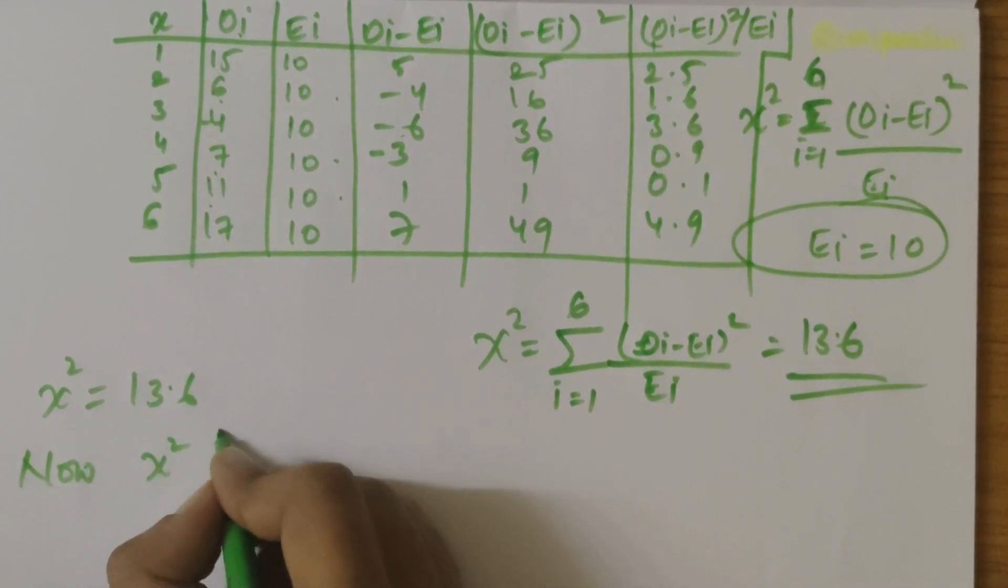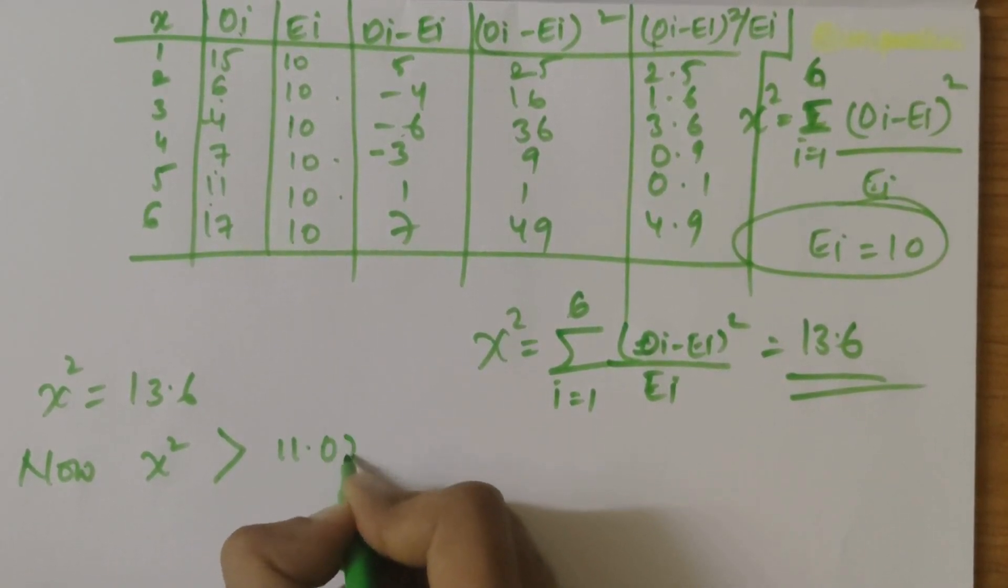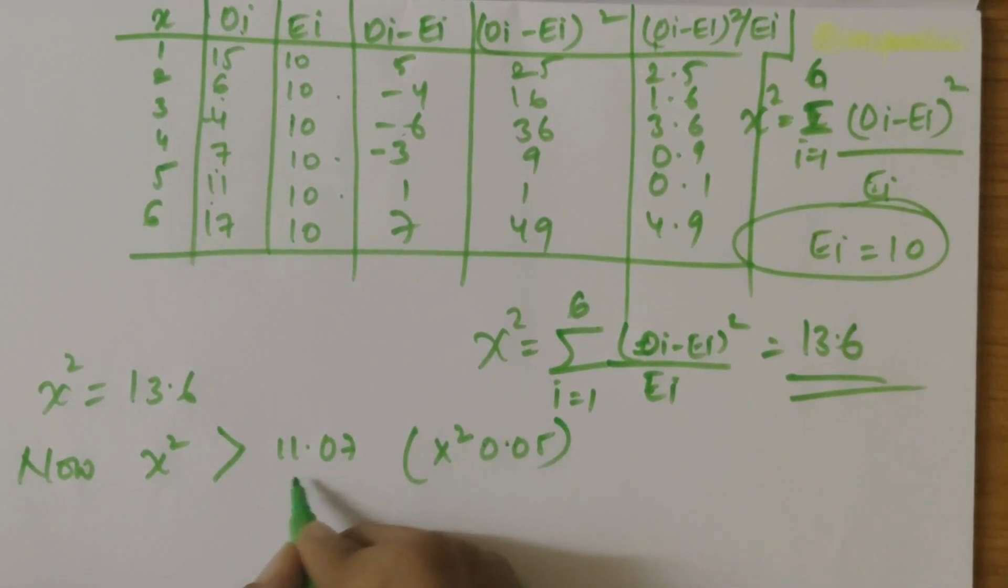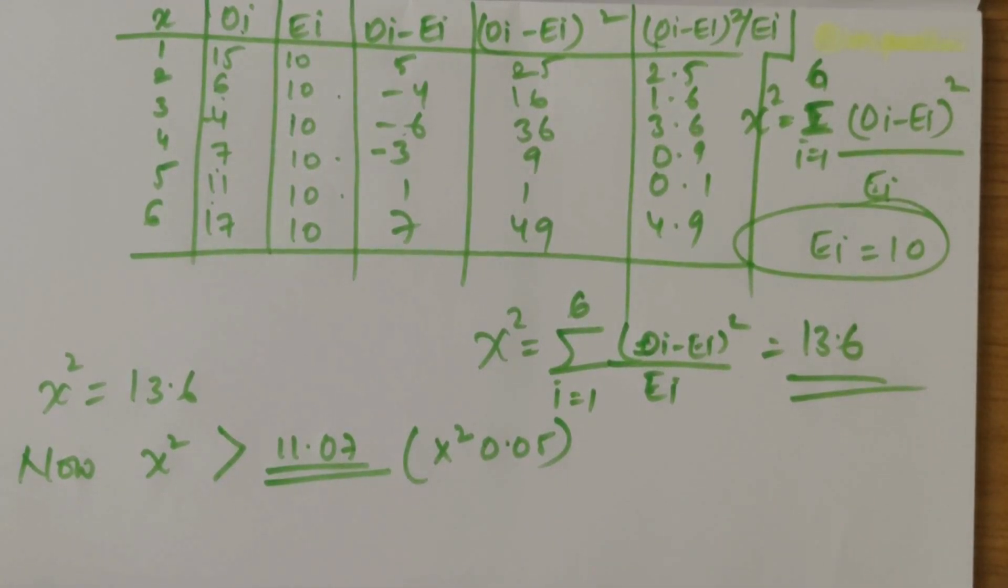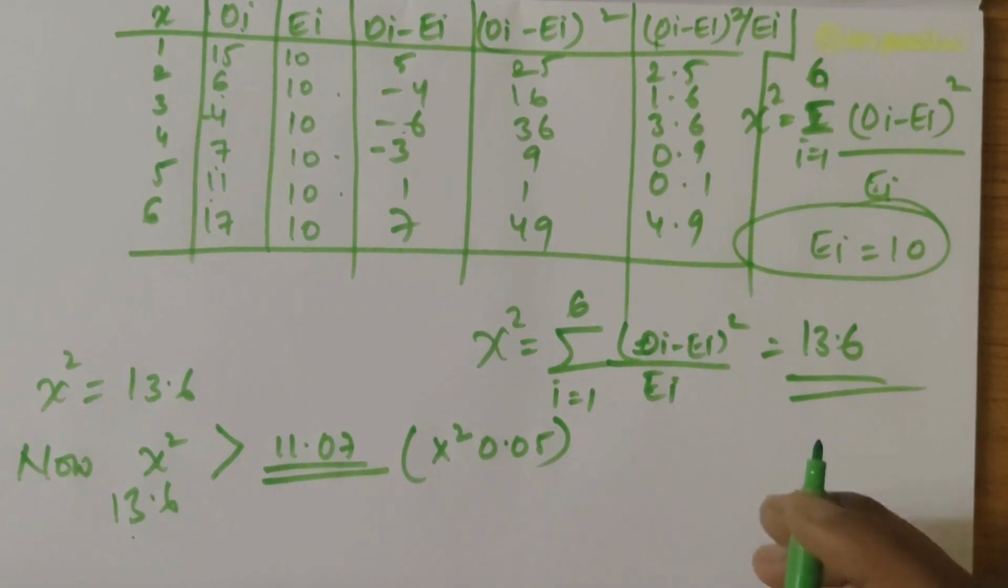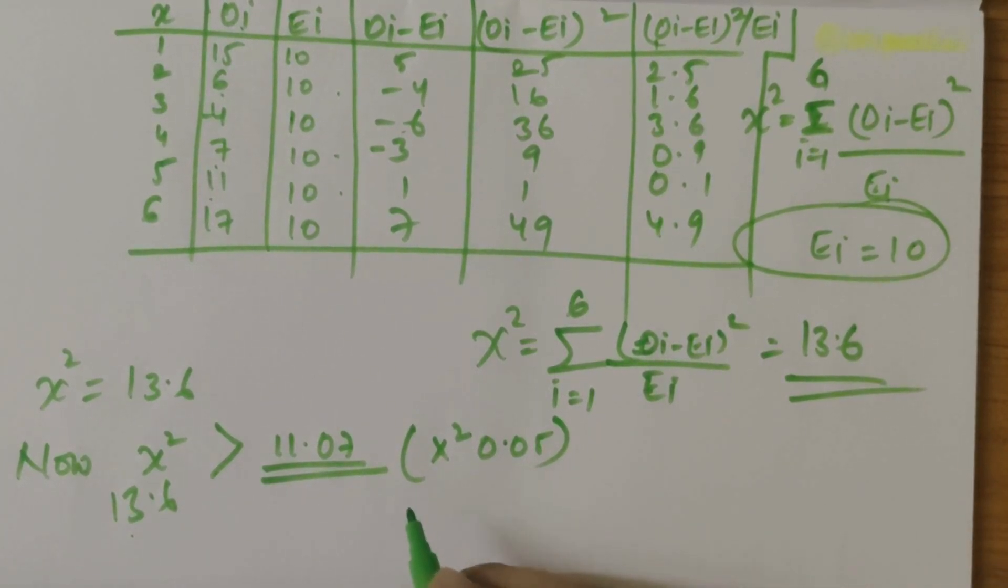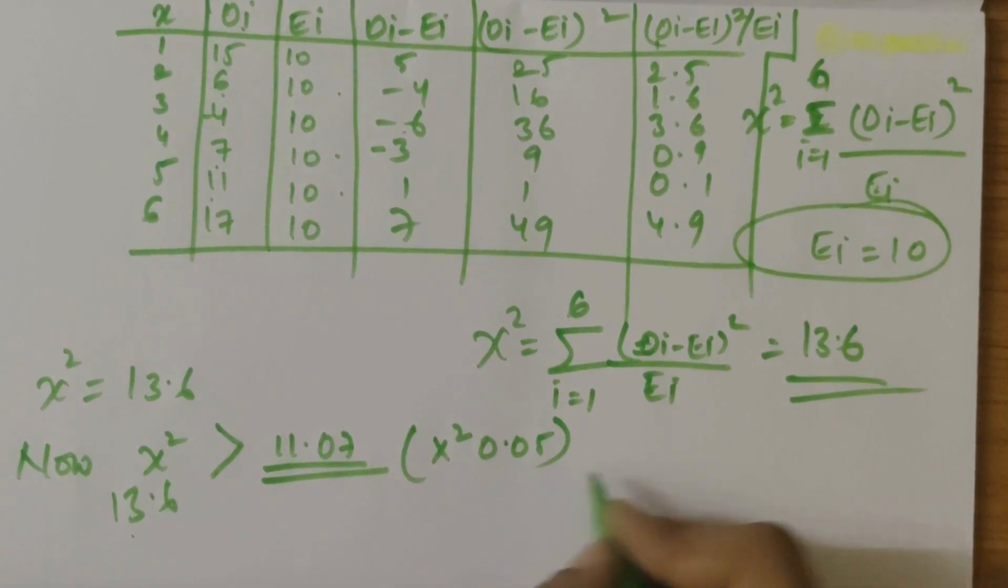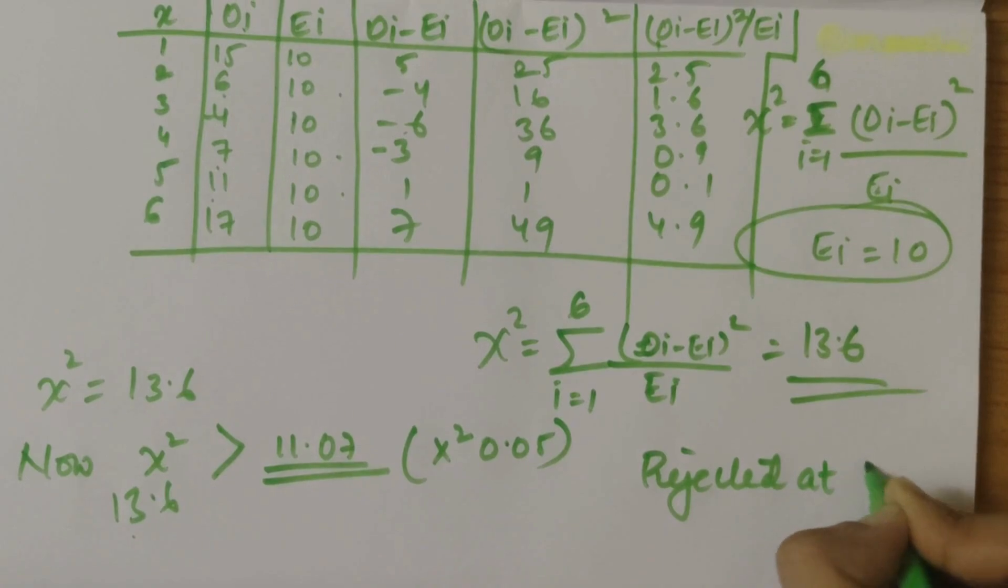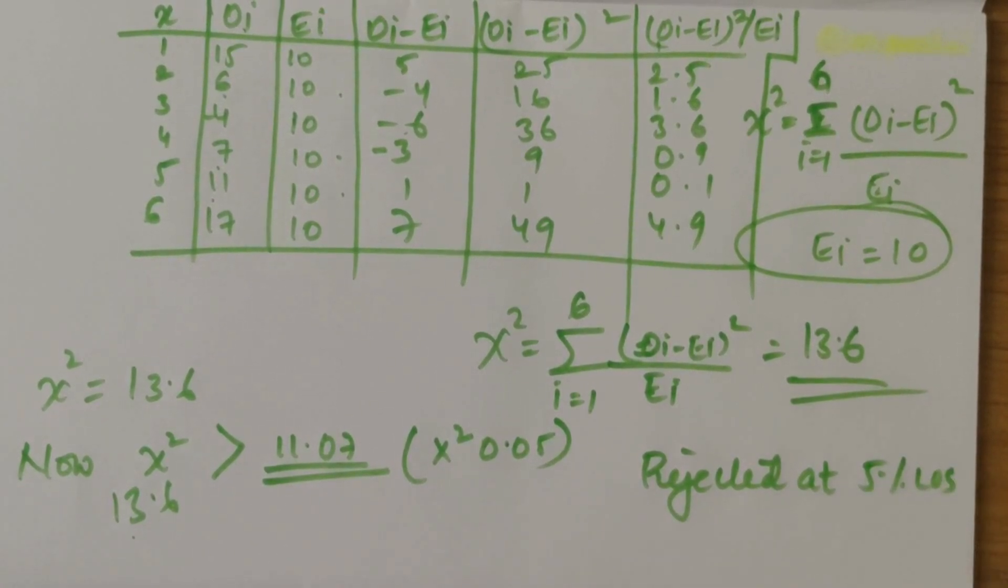Now, chi-square is greater than 11.07, this is chi-square of 0.05. 13.6 is greater than 11.07. As the approximated chi-square is greater than the critical value given, we conclude that the hypothesis is rejected at 5% level of significance.